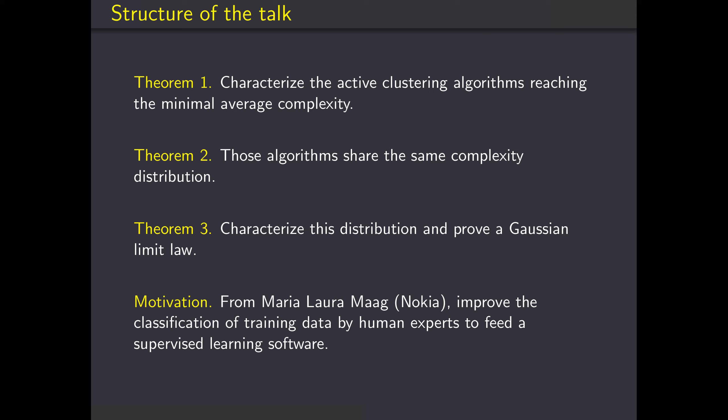We have three theorems to present. The first one characterizes the active clustering algorithms that reach the minimal average complexity, assuming uniform distribution on the set partitions of size n. The second theorem shows that all those algorithms actually have the same complexity distribution — not just the same mean, but the same probability to ask k queries for any of these algorithms. The third theorem precisely characterizes this distribution and proves a Gaussian limit law. The motivation for this work came from Maria Laura Mag, engineer at Nokia.